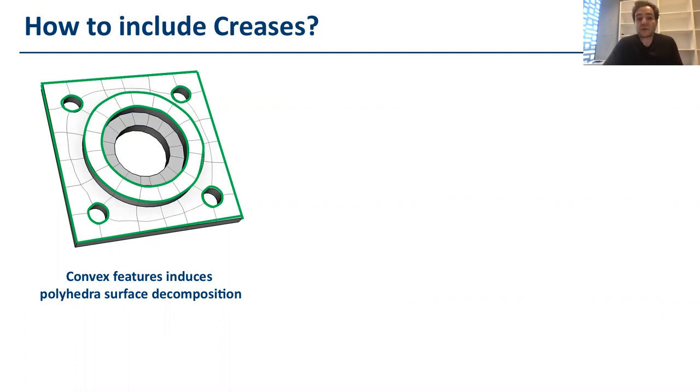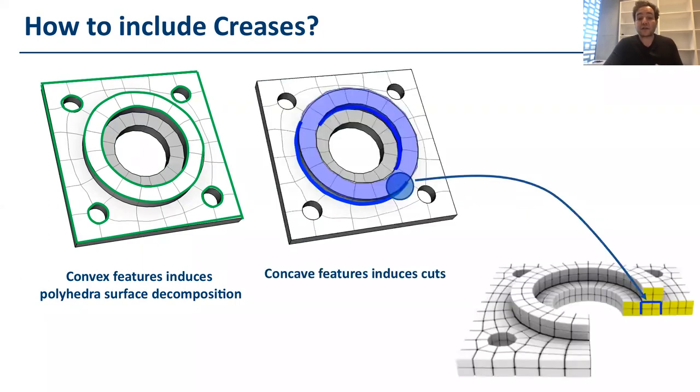So, sharp features can be concave or convex. If they are convex, they are pretty simple because we don't have to cut nothing with them. So, we just include the convex features for the polyhedra decomposition in the end. While the concave features are more important because we should use them to produce cuts within the volume, as the one shown here in the slide.